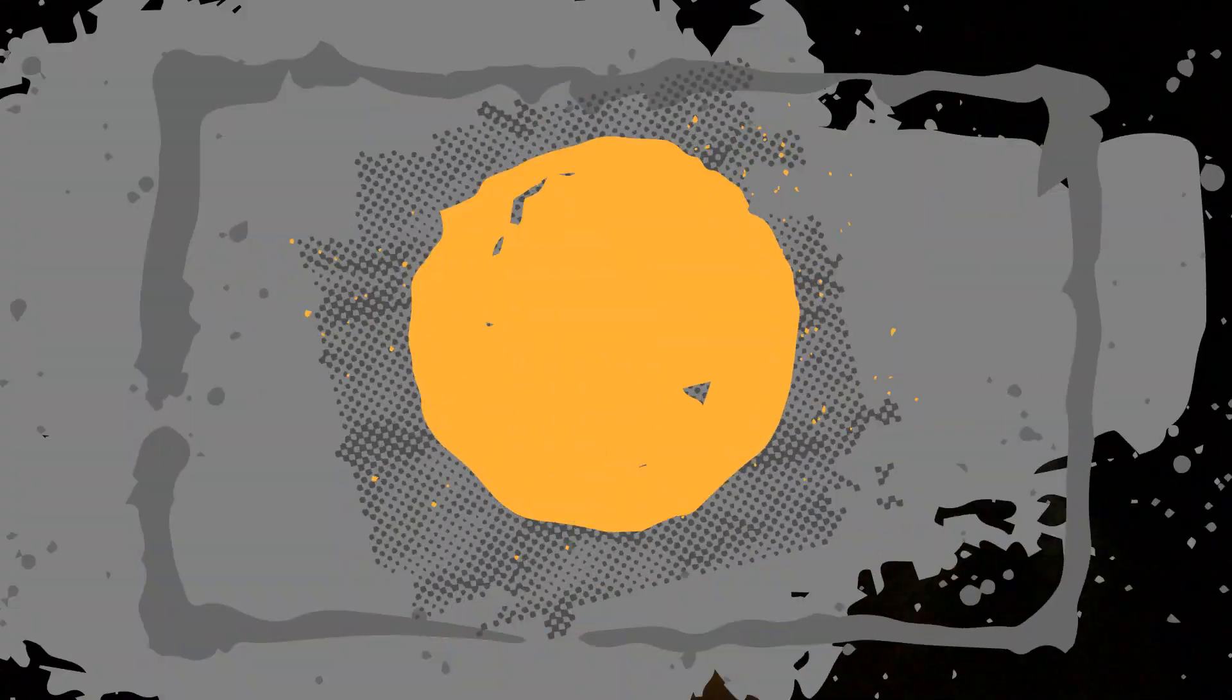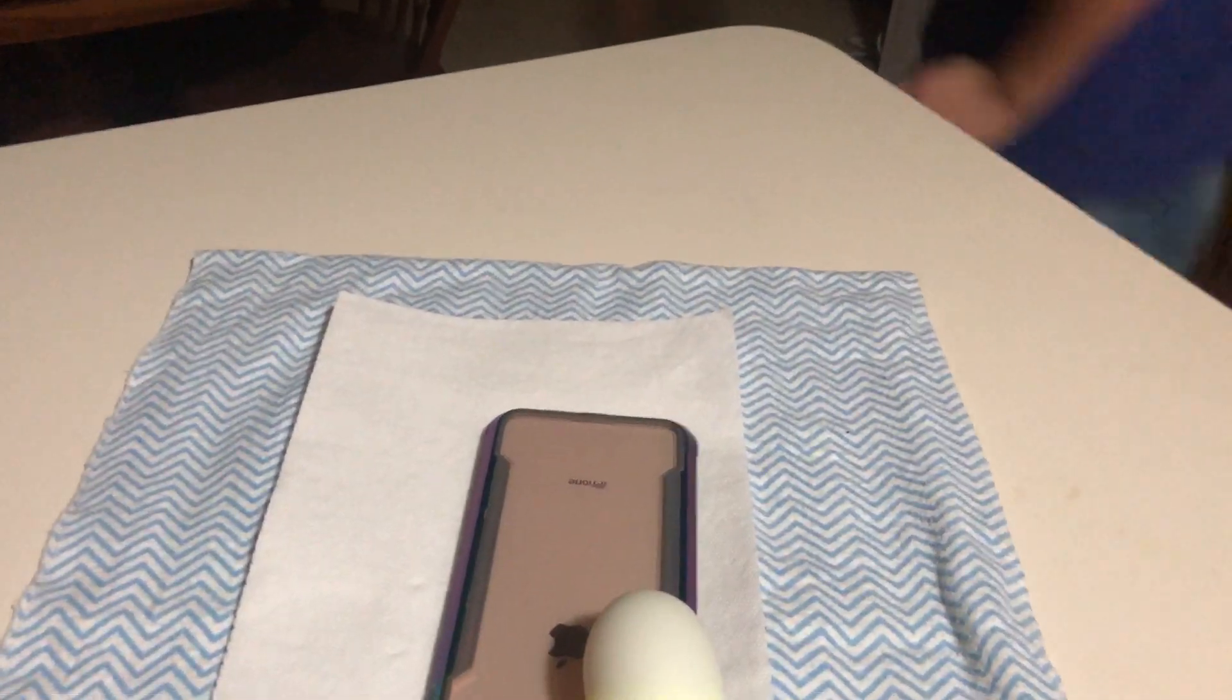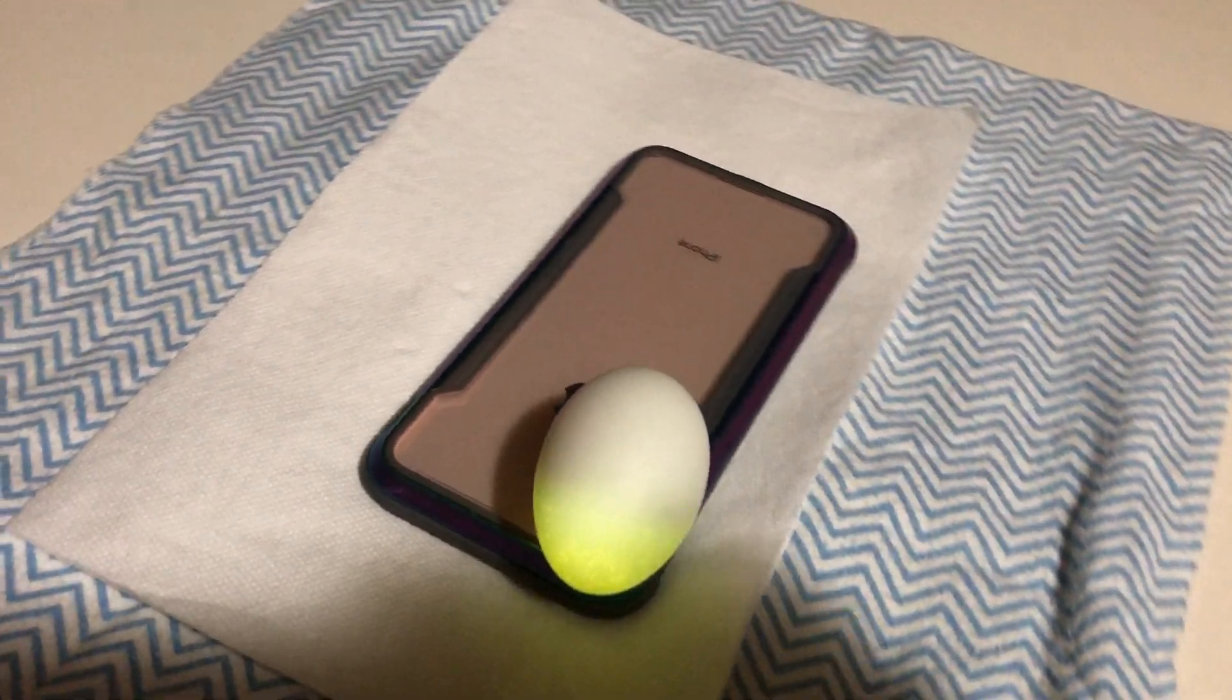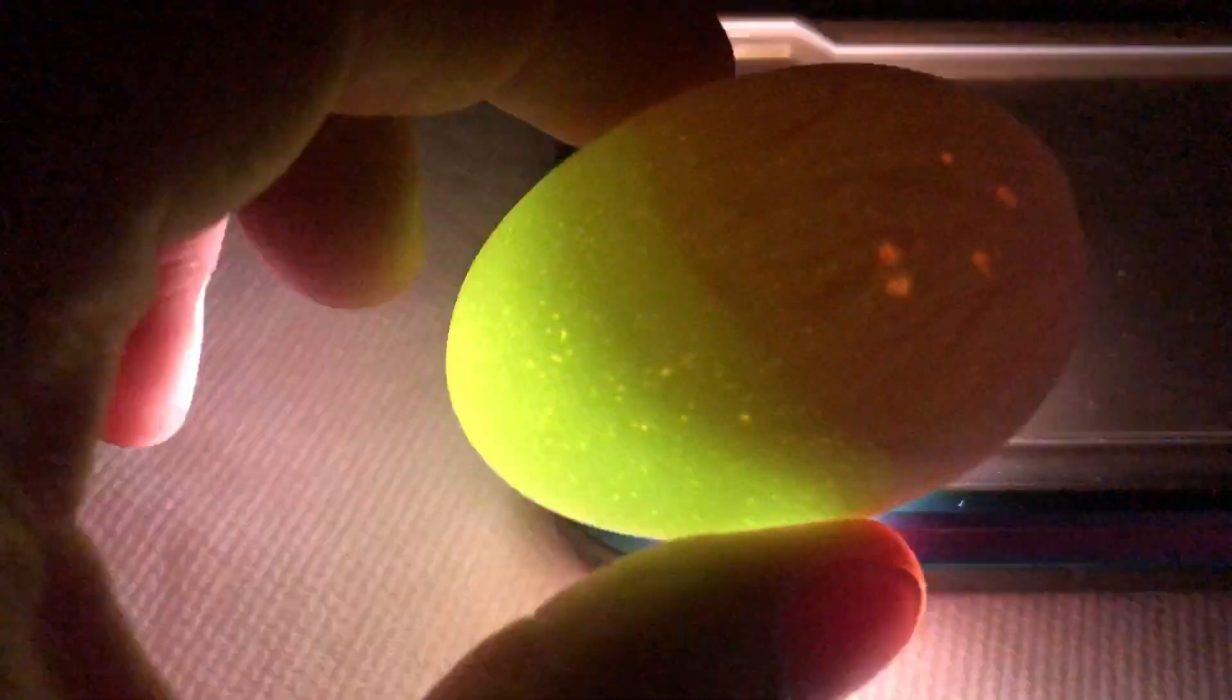This is the second largest chicken egg right here. Jennifer's gonna get the light here. This is more of the greener one, as you can see. Oh yeah, definitely growth right away. Now look for that blob that I told you about. Definitely veins, definitely growth.